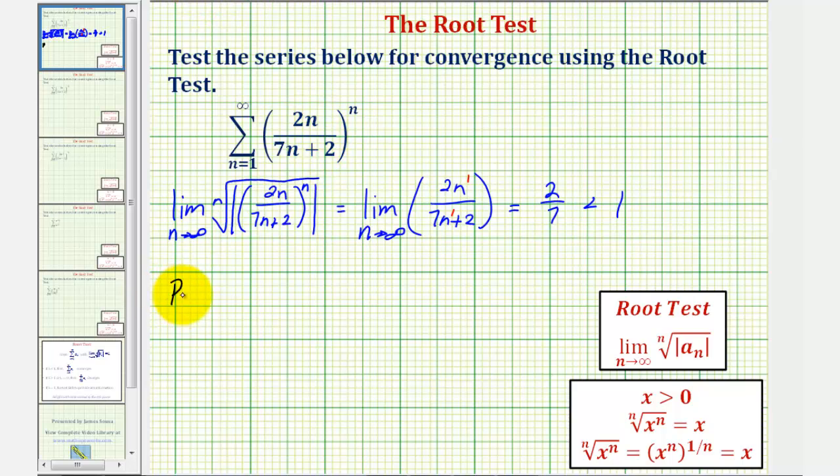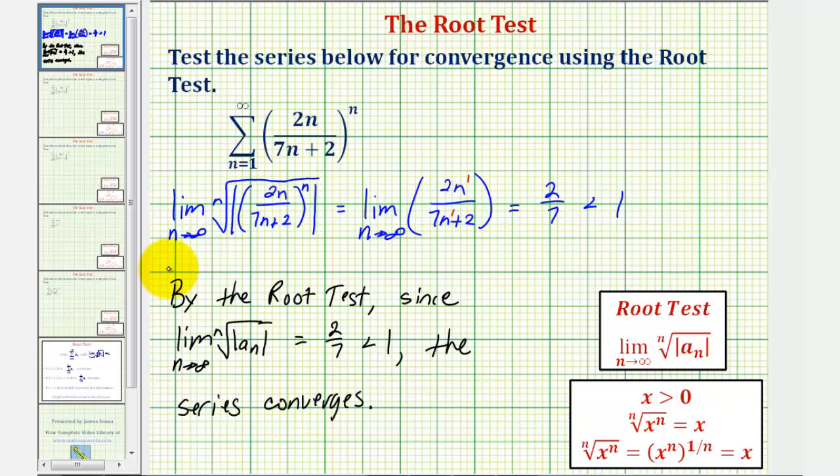So by the root test, since the limit as n approaches infinity of the nth root of the absolute value of a_n equals 2/7, which is less than one, the series converges. I hope you found this helpful.